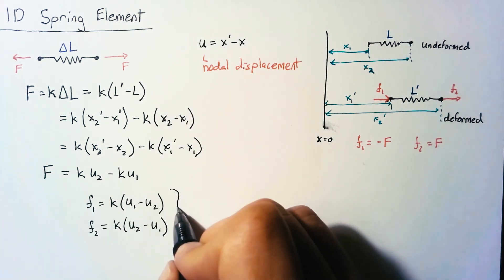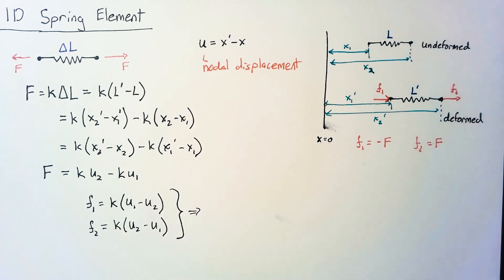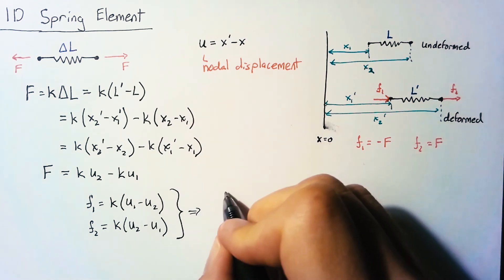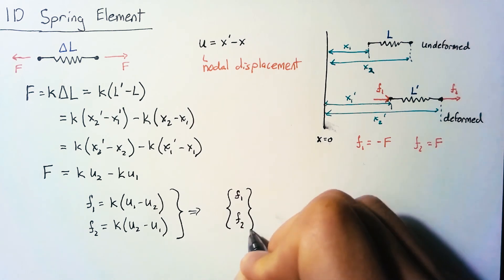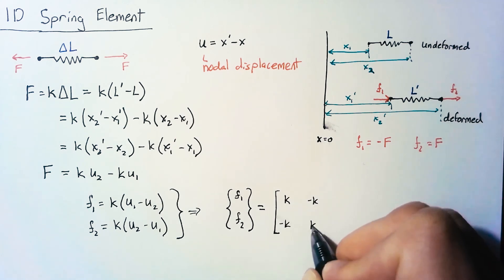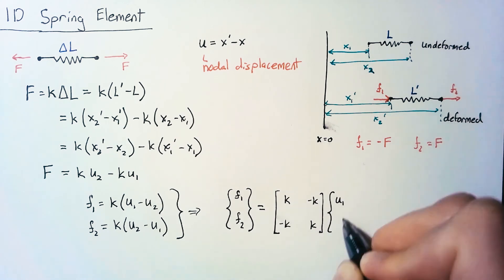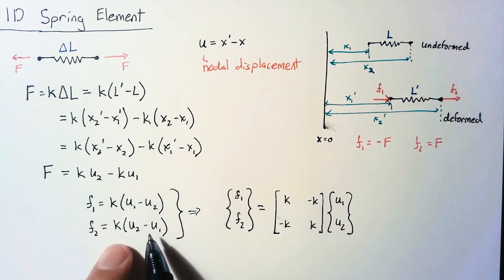Now we're going to take these two equations and we're going to rewrite them in matrix form. Everything we do in finite element analysis is based off of the matrix form of the equations. And so we're going to end up with a vector of forces which is going to be equal to a stiffness matrix multiplied by a vector of displacements. And of course we can multiply this out and we end up with exactly what we have over here.